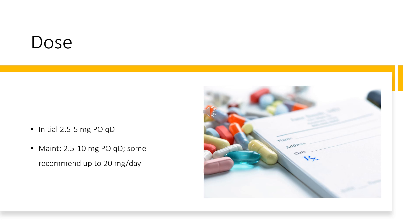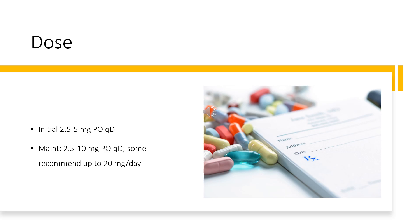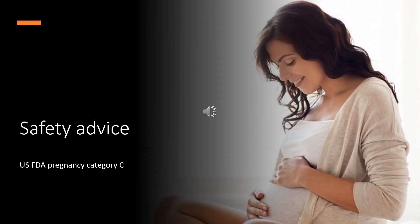Hepatic impairment: initial 2.5 mg PO QD. Safety advice: US FDA pregnancy category C — animal reproduction studies have shown an adverse effect on the fetus and there are no adequate and well-controlled studies in humans, but potential benefits may warrant use of the drug in pregnant women despite potential risks.